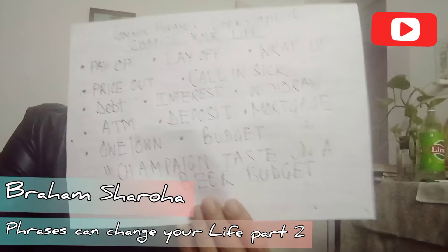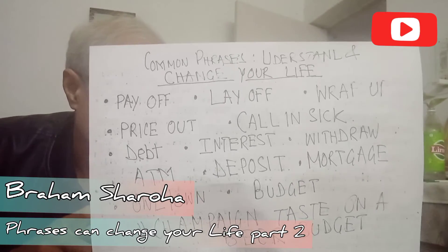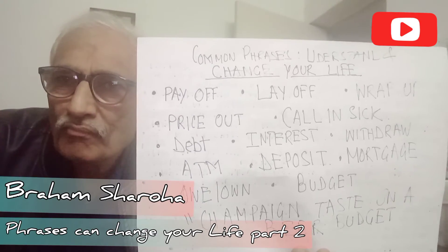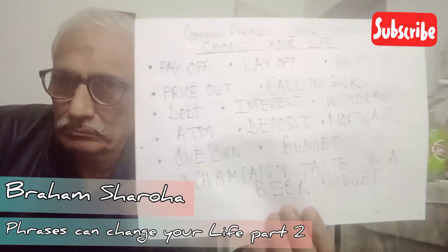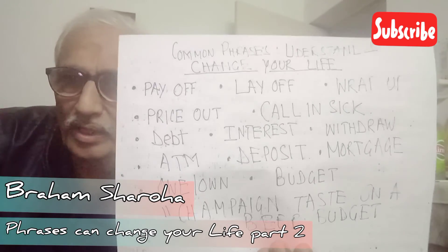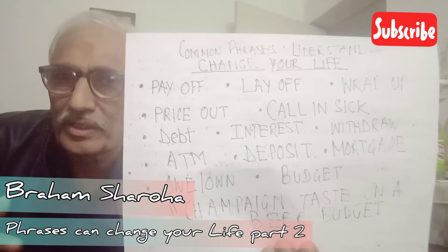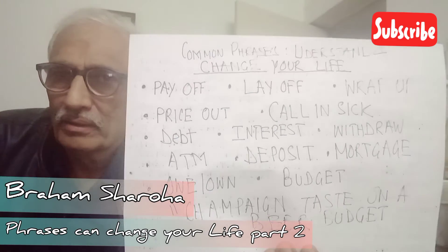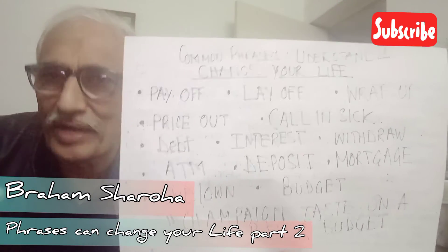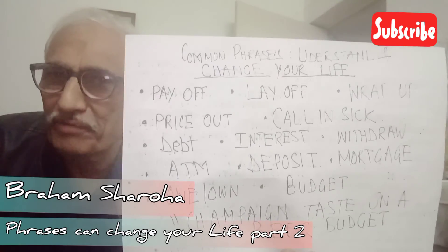Let's look at two more words: 'owe' (O-W-E) and 'own' (O-W-N). 'Owe' means you are obligated to give something — for example: I owe you a lot of credit for having worked with me as a partner, or I owe you money, I owe you gratitude, I owe you a favor. 'Own' means you possess something — for example: I own a beautiful red car.